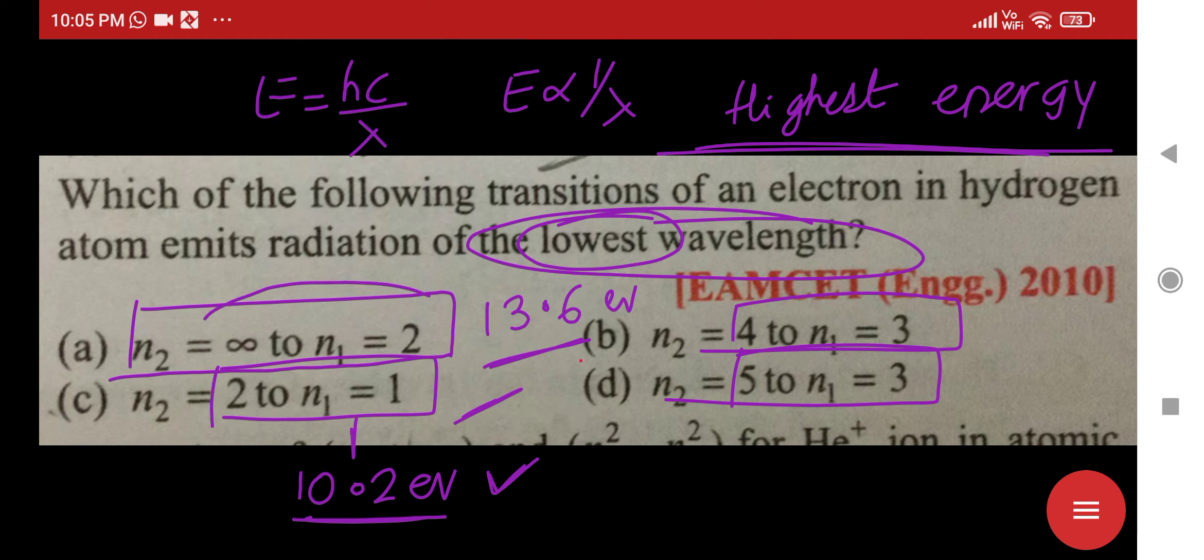Even when you are saying infinity to 2, that means the total energy required is 13.6. That means when electron is coming from infinity to 1, it's 13.6. Infinity to 2 means it will be 13.6 and 10.2 difference. That is just 3.4 electron volts. Don't get confused by seeing this infinity. Infinity to 2 is not great.